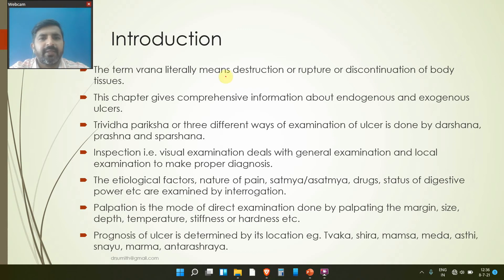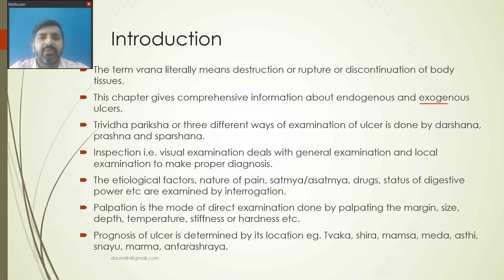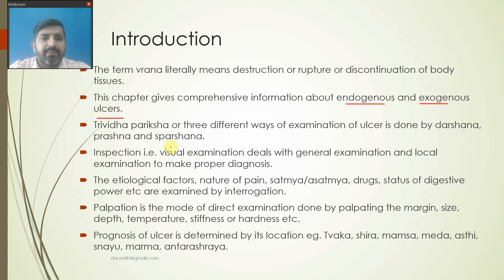The term Vrana literally means destruction, rupture, or discontinuation of the body tissues. This chapter deals with comprehensive information about exogenous and endogenous ulcers - Aganduja and Nija Vrana. There are two types of Vrana: Aganduja Vrana and Nija Vrana. Trivrita Pariksha, or three different ways of examination of ulcer, is done by Darsana, Prashna, and Sparshana. Inspection or Darsana is used for visual examination covering general and local examination to make proper diagnosis.